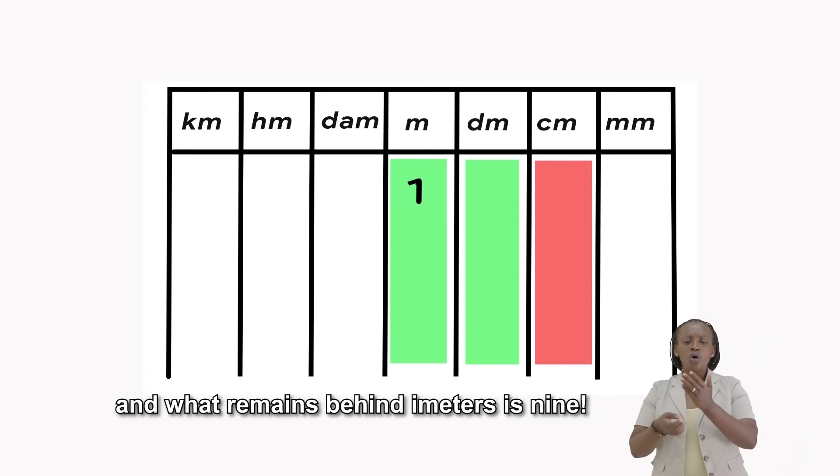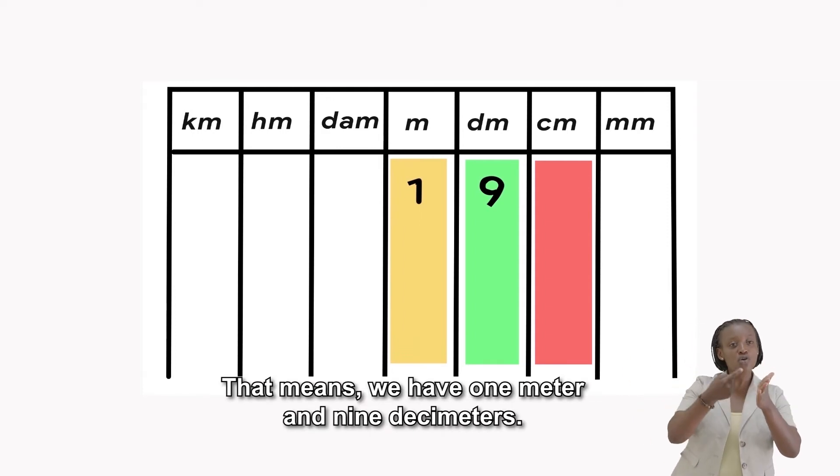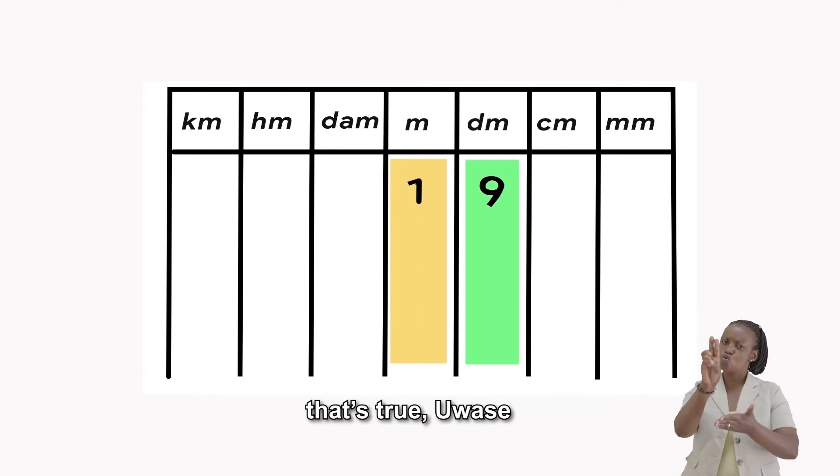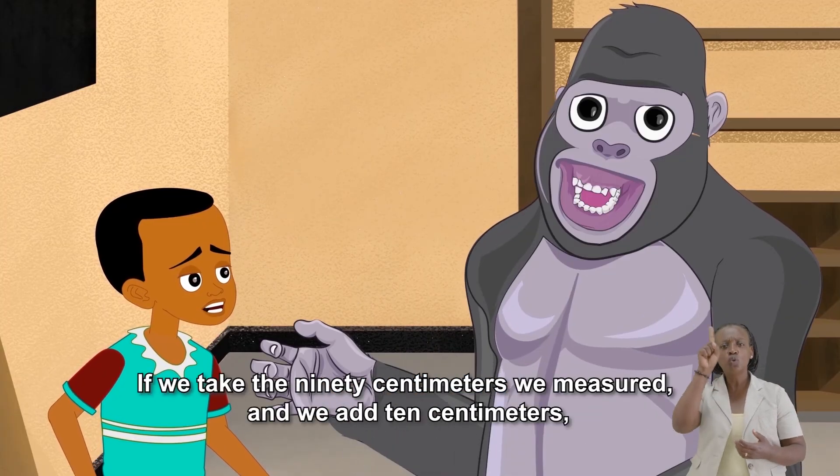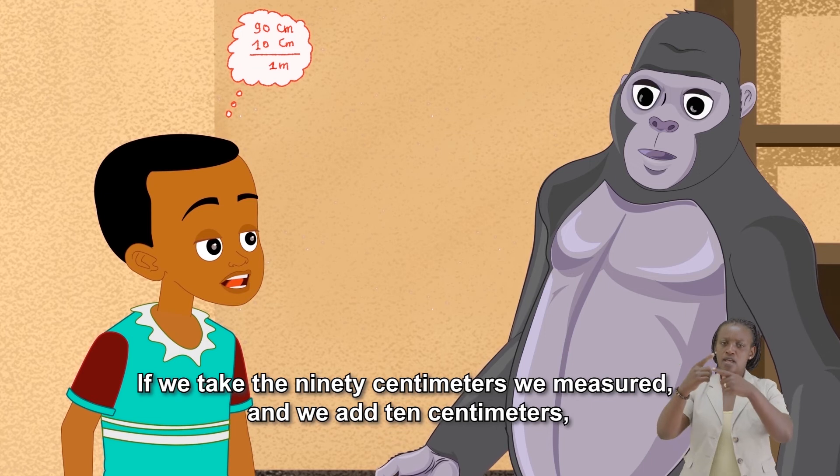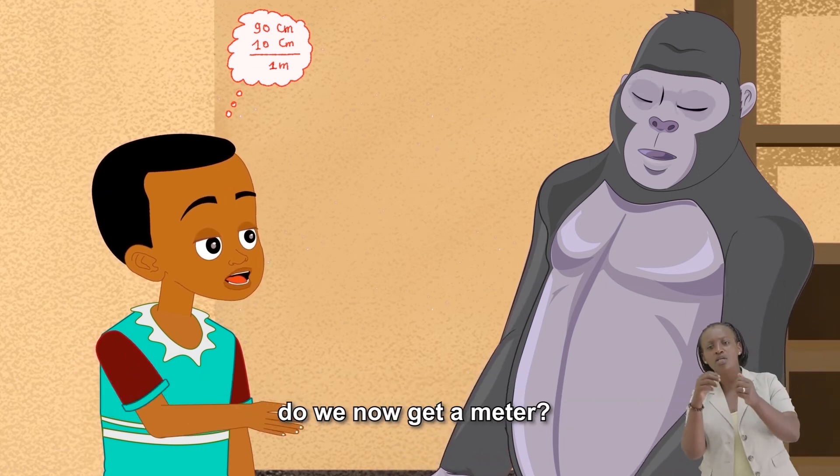And what remains behind meters is 9. That means we have 1 meter and 9 decimeters. That's true, Uwase. I have a question. Yes, my dear. If we take the 90 centimeters we measured and add 10 centimeters, do we now get a meter?